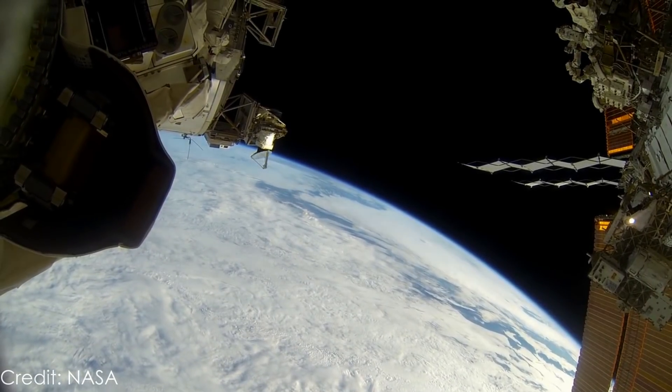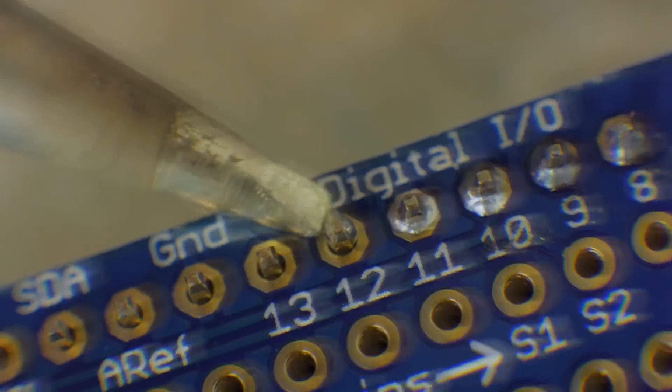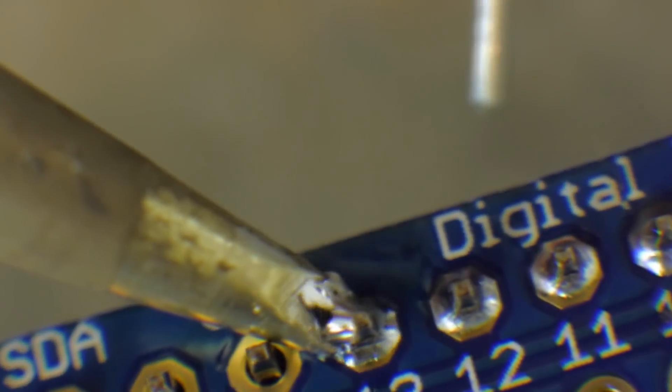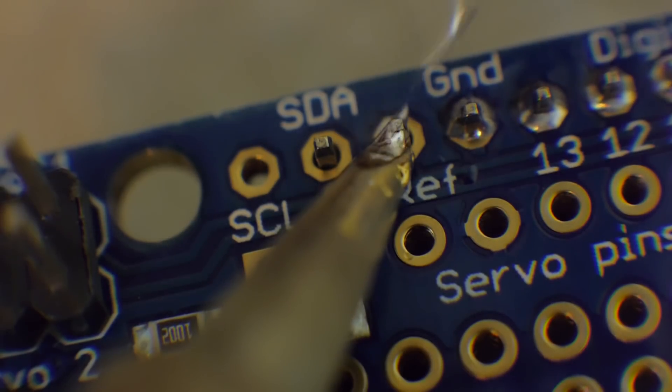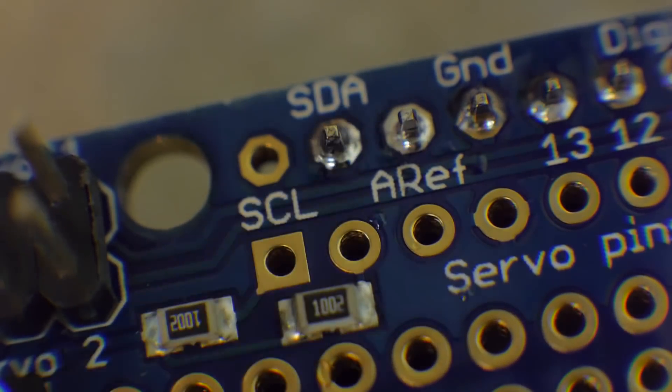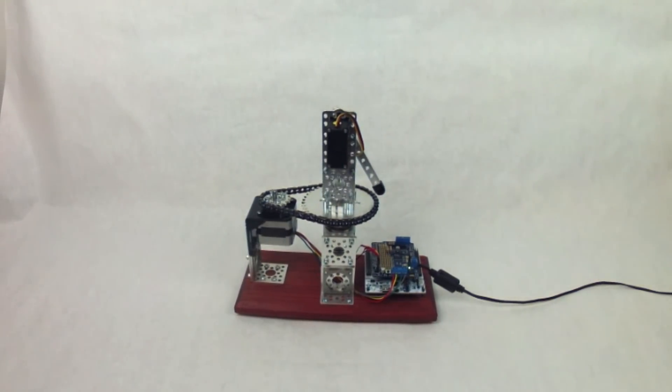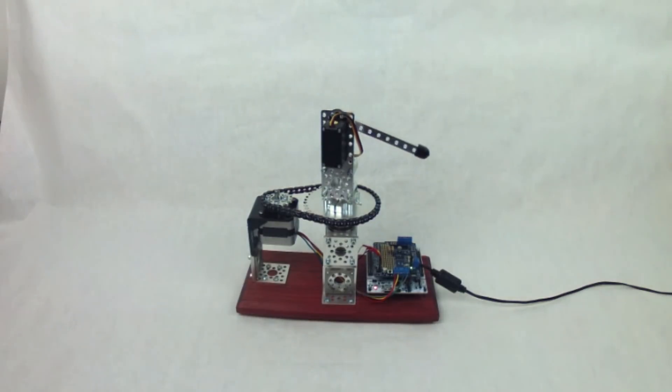This is the first prototype of the International Space Station orbit tracking pointer.